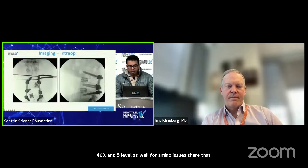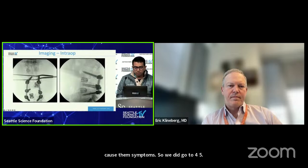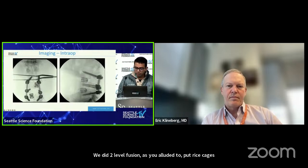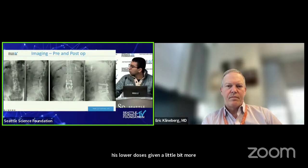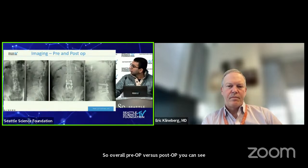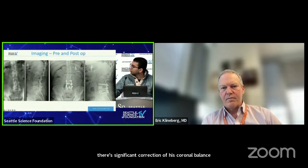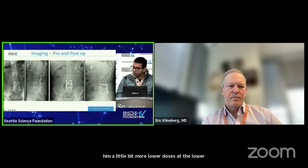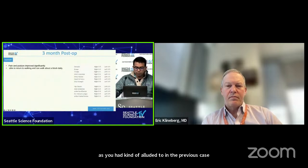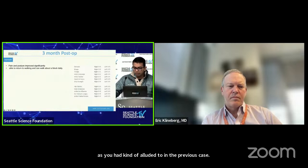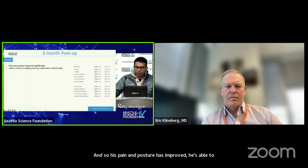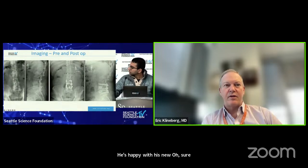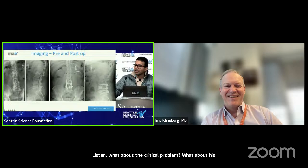We did a two-level fusion with TLIF cages, got some coronal correction, and gave him a little more lordosis. Pre-op versus post-op at three months shows significant correction of his coronal balance and improved sagittal balance with more lordosis at the lower levels. His pain and posture improved, he's able to return to walking significantly, his EHL weakness is gone, and he's happy with his new posture. His critical presenting problem was his sexual dysfunction — he came to clinic with his mom.